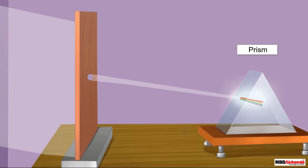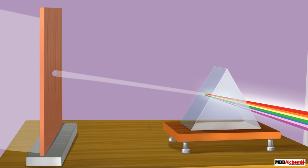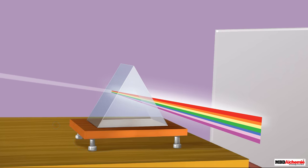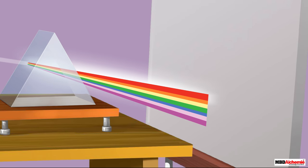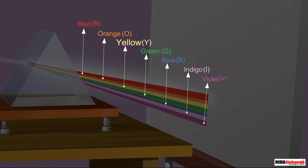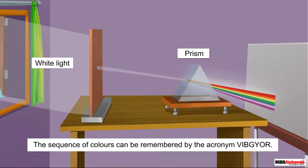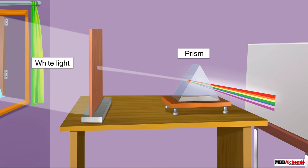At the other end of the prism, fix the white sheet as shown. As the sunlight passes through the prism, you will observe a beautiful band of colors appearing on the white sheet. These colors from the bottom are in the order: violet, indigo, blue, green, yellow, orange, and red — remembered by the acronym VIBGYOR.